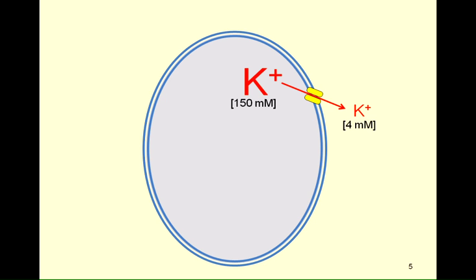The potassium diffusing out of the cell moves through specific potassium channels — protein structures associated with the membrane that regulate its permeability to potassium. Because potassium has a single positive charge, a positive charge leaves the cell, leaving behind excess negative charges from negatively charged ions and molecules such as proteins present within the cell. As potassium leaves, the cell becomes more negative on the inside relative to the outside. A point will be reached when the negative charge inside is sufficient to counterbalance the outward diffusion of positive charges — when the chemical gradient is in equilibrium with the electrical gradient. We term this the equilibrium potential for potassium.